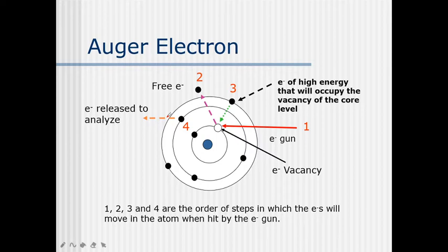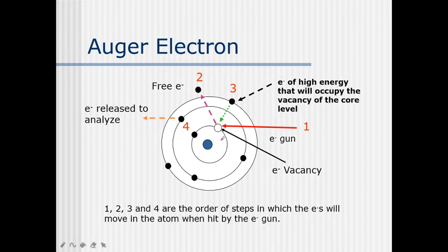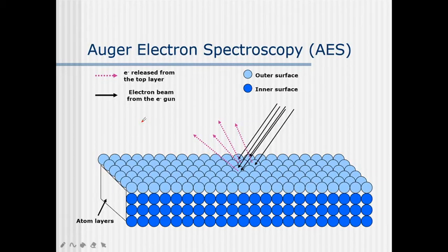The electron gun gives an electron to the core level; the core electron gets released. The next higher energy electron occupies the vacant position and releases some energy. This energy is picked up by the next electron, which is ejected out. This ejected electron is called the auger electron. This is auger electron spectroscopy on a surface level and an inner surface.